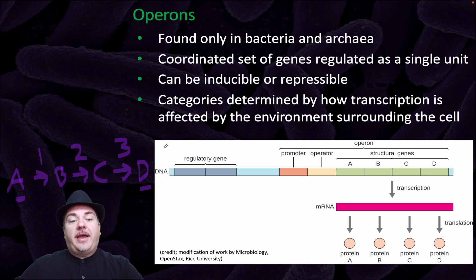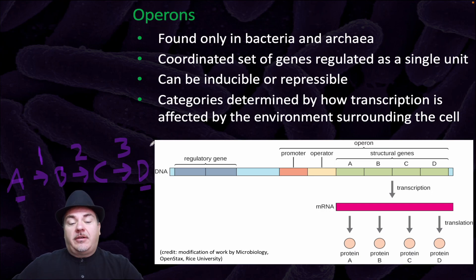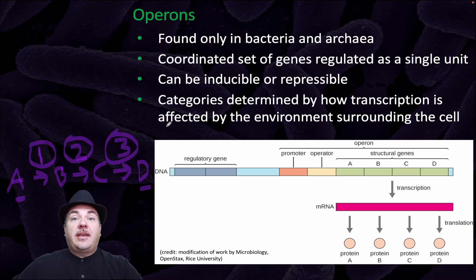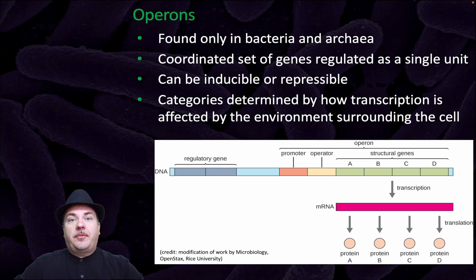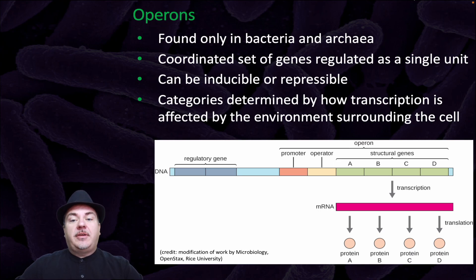If you have a metabolic pathway, what you really need is either all those enzymes functioning or none of them functioning. It doesn't help to only have enzyme one without enzyme two or three — that would serve no purpose. So you have to have all three enzymes at the same time because they're going to be used together. Bacteria have come up with a way of expressing this where all the proteins from genes that should be working together are expressed together. These are called operons.